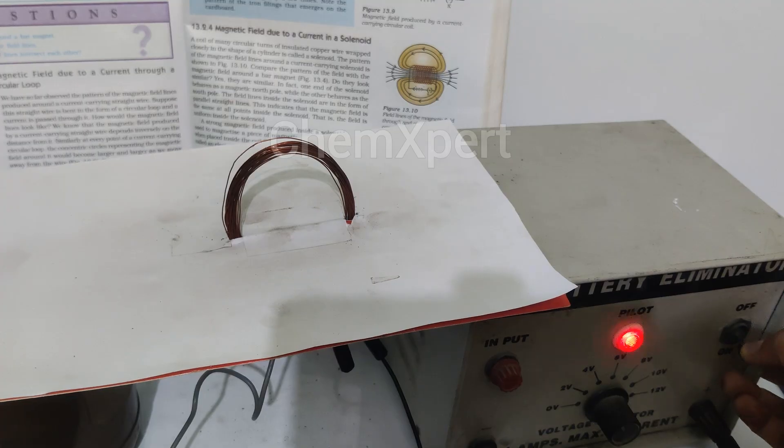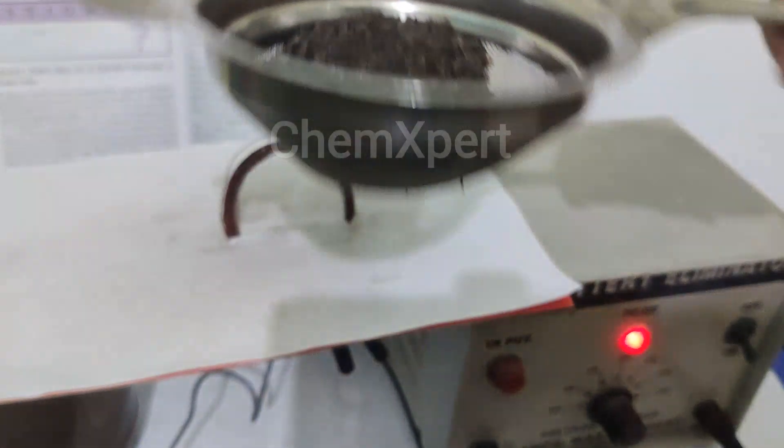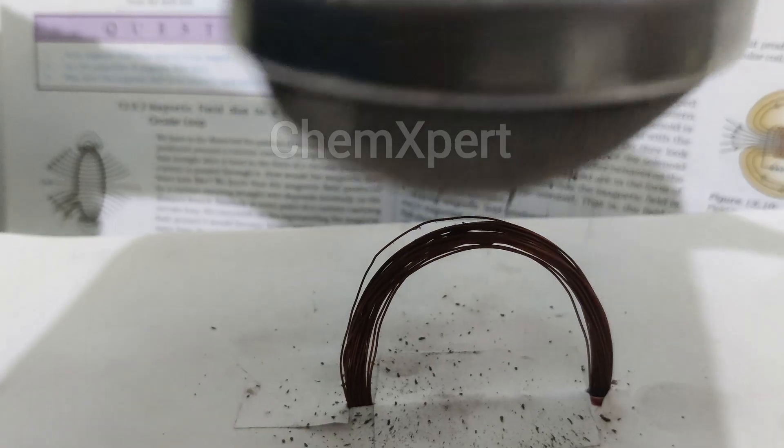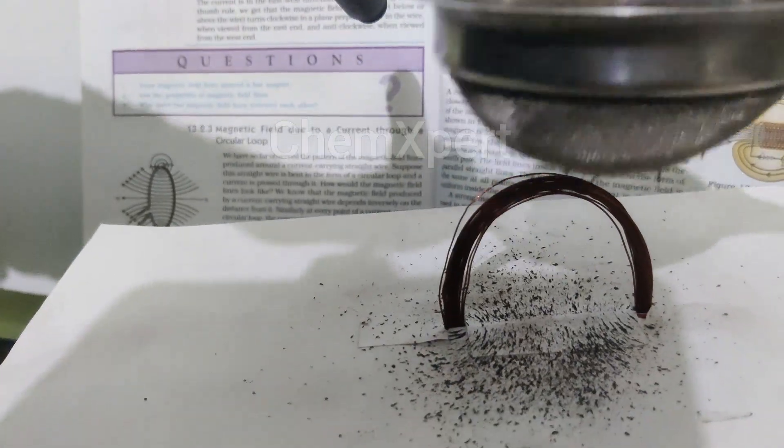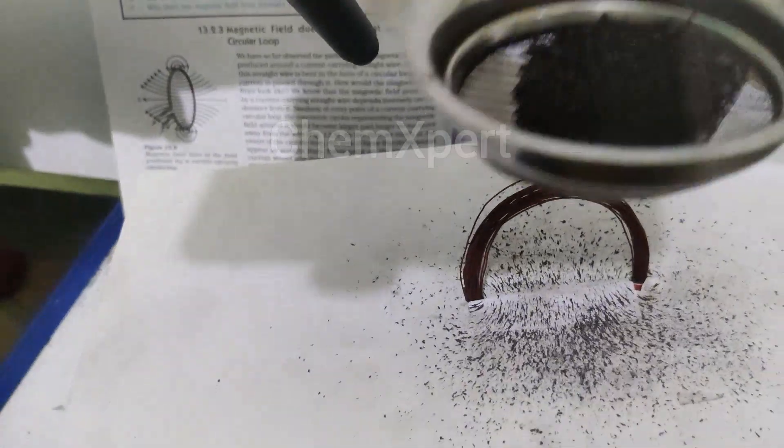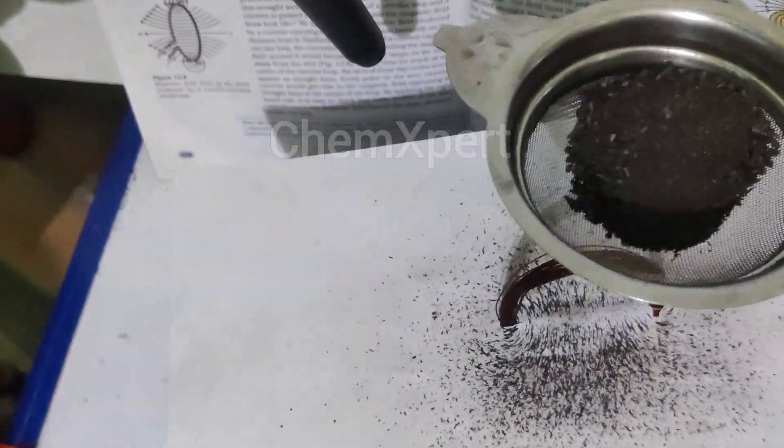I will switch this on and then sprinkle these iron filings over it. These are the concentric circles which are formed at the two ends.